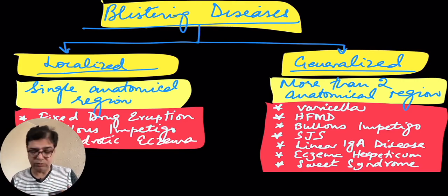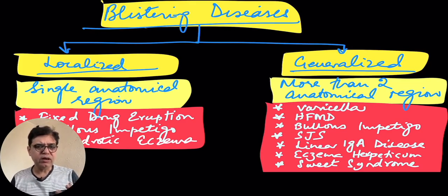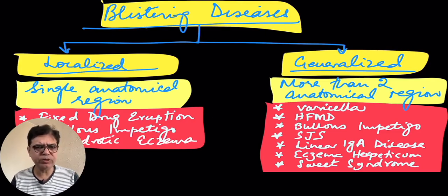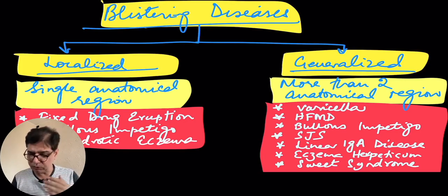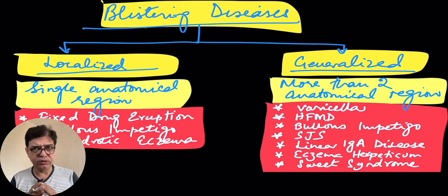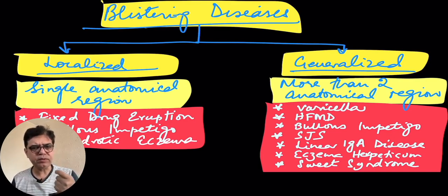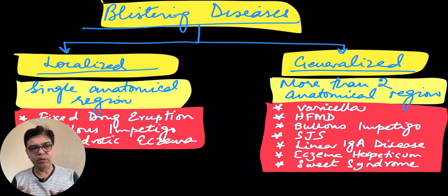A good example of a rash affecting just one anatomical region is a fixed drug eruption — an adverse skin reaction to a medicine, most commonly sulfonamide drugs. A fixed bulla or a few vesicles pop up at one anatomical position and have the propensity to recur at the same spot, hence the name. That is a classical example of a localized vesicular rash. Bullous impetigo can also sometimes affect just one part of the body, like the face, with a few vesicular spots and golden honey-colored encrustation.